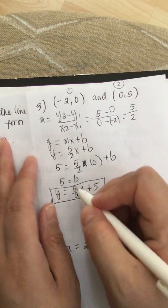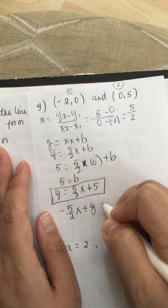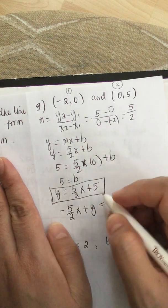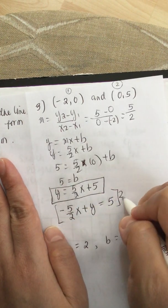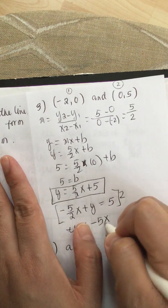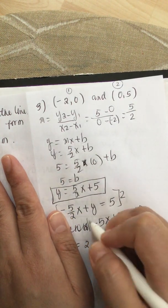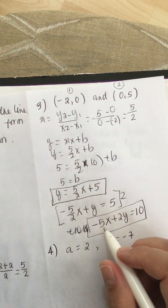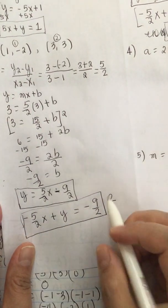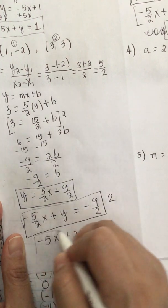Now we have to write it in standard form. We subtract 5 over 2x from both sides, giving us negative 5 over 2x plus y equals 5. You can get rid of this fraction by multiplying everything by 2, which gives minus 5x plus 2y equals 10. Your choice — you can leave it with fractions or multiply by 2. These represent the same equation.